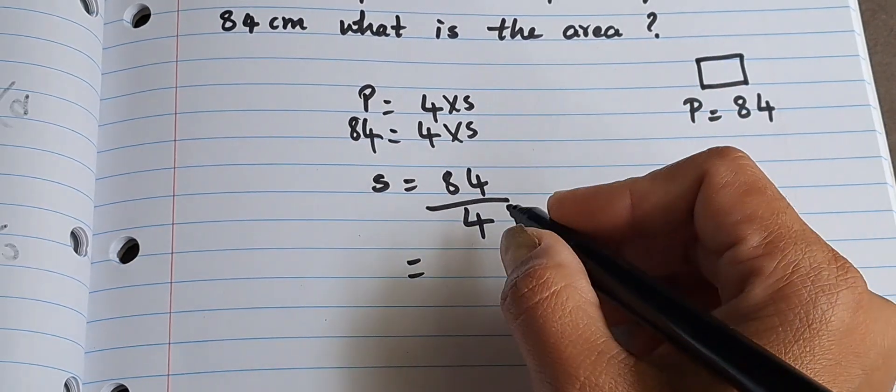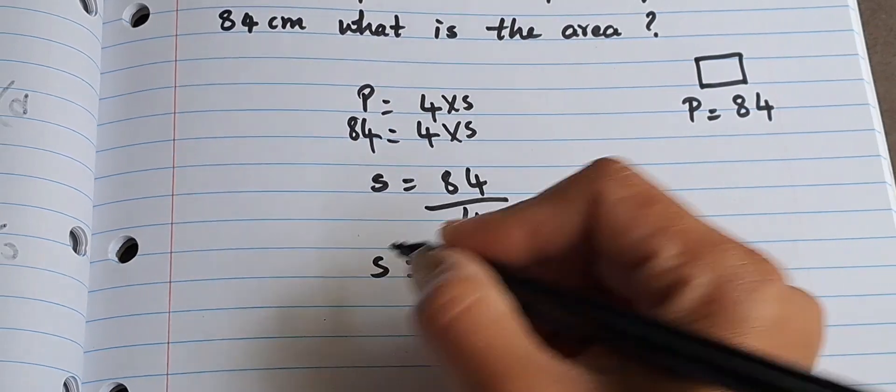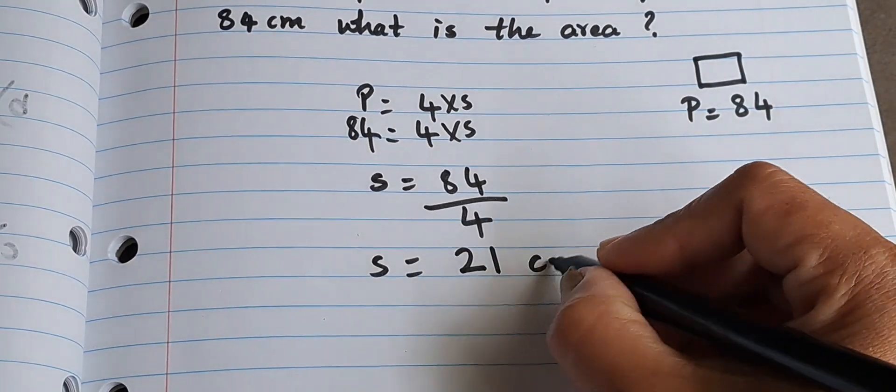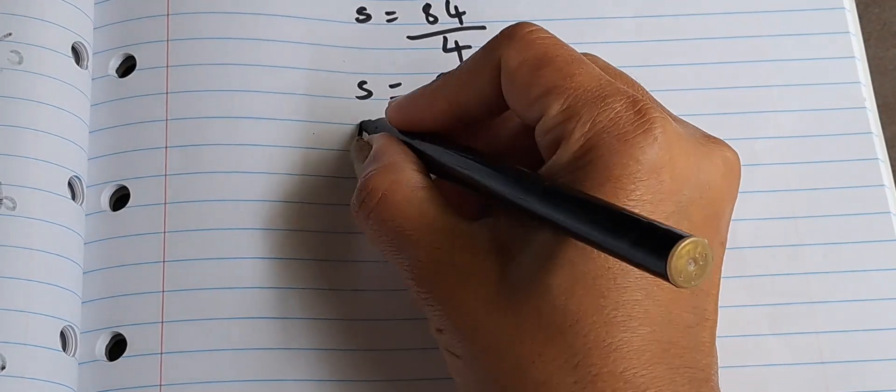So this becomes 21. So the side is 21 centimeters. Now we have a formula for area of a square, that is side squared. Side squared means side times side.